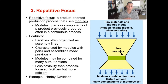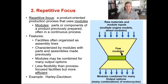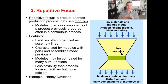A repetitive focus is a product-oriented production process that uses modules or sub-assemblies. The features of a repetitive focus are: facilities are often organized in assembly lines; modules can be combined for many different outputs; and there's less flexibility than a process-focused facility, but more flexibility and more efficiency than a product focus.